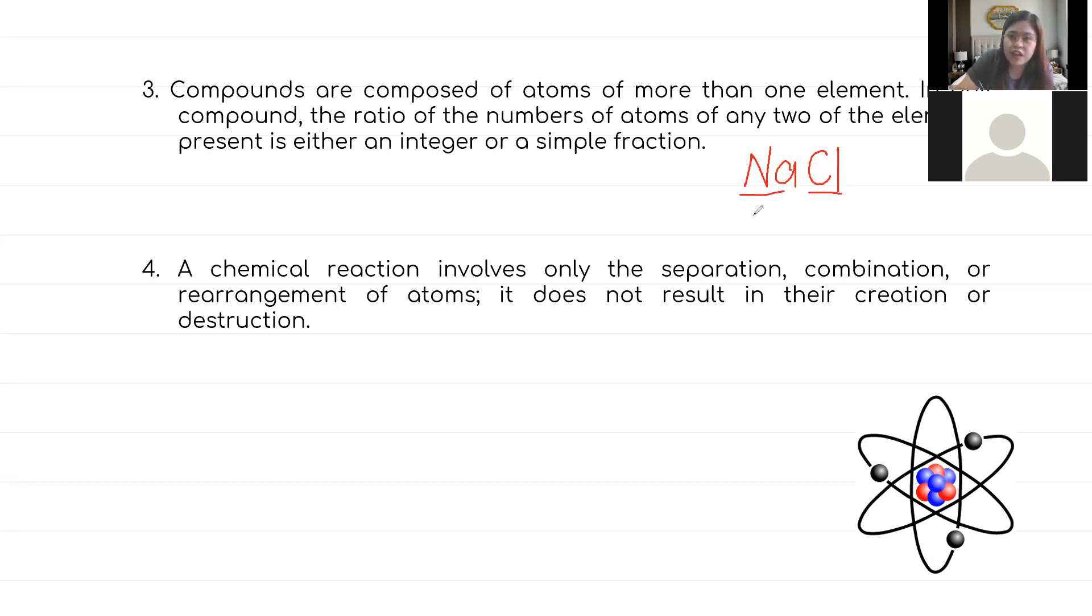This one is an integer. To form table salt, you need one atom of sodium and one atom of chlorine, so one-to-one is their ratio. That's what you call a compound. That is also true for water. You need two atoms of hydrogen combined with one atom of oxygen.